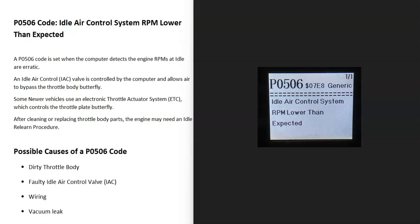Today I'm talking about a P0506 code — what it is and how you go about fixing it. The P0506 code is an idle air control system RPM lower than expected.